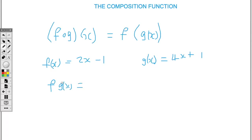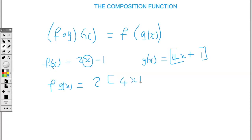If I ask for f of g, all this is saying is you're substituting the g function into f — where you see the variable x. So I'll be replacing the variable x with 4x plus 1. So I'll have 2 open bracket, 4x plus 1, close bracket,